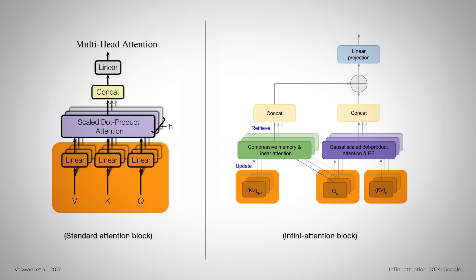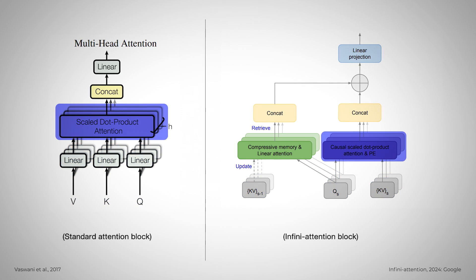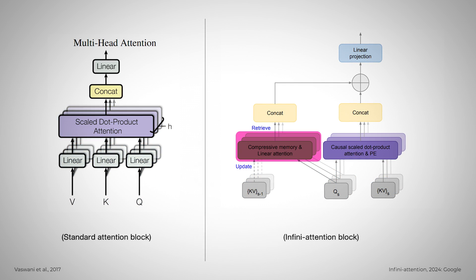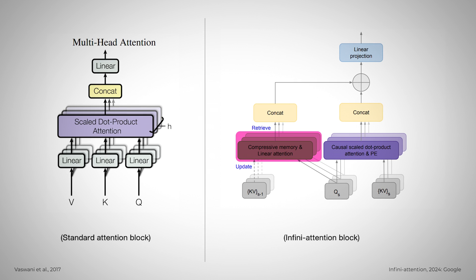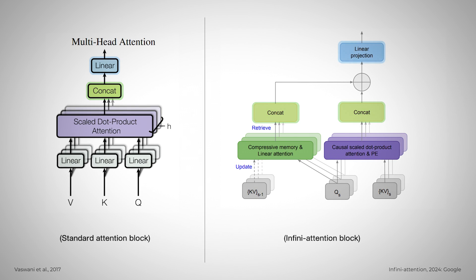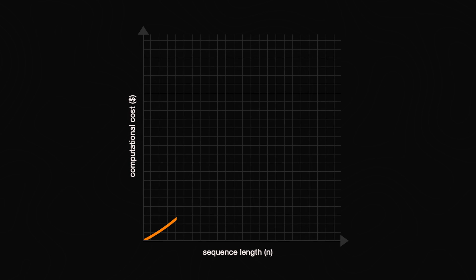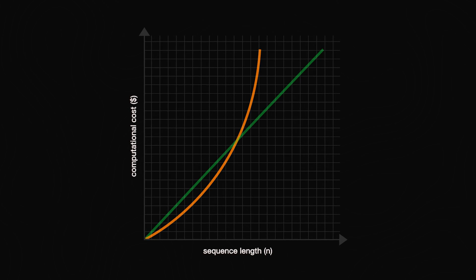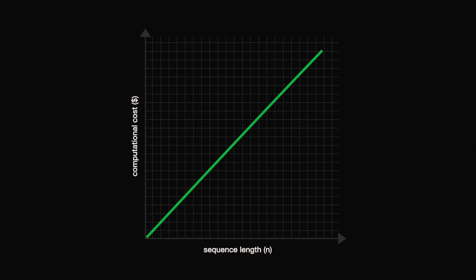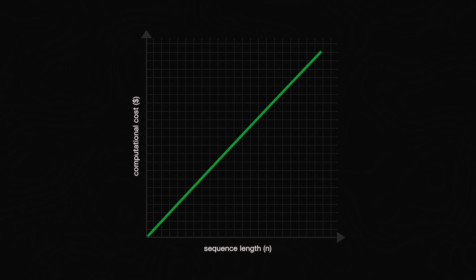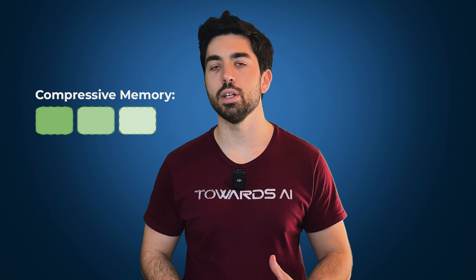Infini-Attention modifies the standard attention mechanism by dividing the calculation into two distinct parts: one for local information, focusing on nearby words, and another for long-range relations, connecting words that are significantly farther apart in the text. A major enhancement of this model is its ability to transform the computational costs from quadratic to linear with respect to the sequence length. This is achieved through key modifications to the attention mechanism, including the introduction of compressive memory.